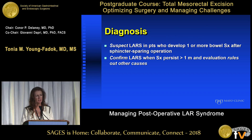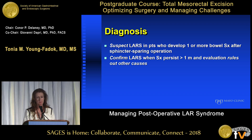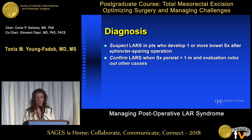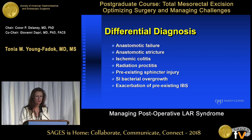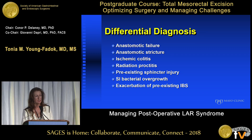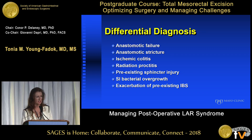For diagnosis, it's important to suspect this syndrome in patients who have one or more bowel symptoms. When those symptoms persist beyond a month after closure of the ileostomy, that confirms the diagnosis once you've ruled out other causes. Other causes include consequences of anastomotic failure or stricture, ischemic colitis, radiation proctitis, pre-existing sphincter injury, bacterial overgrowth, and exacerbation of pre-existing IBS symptoms.